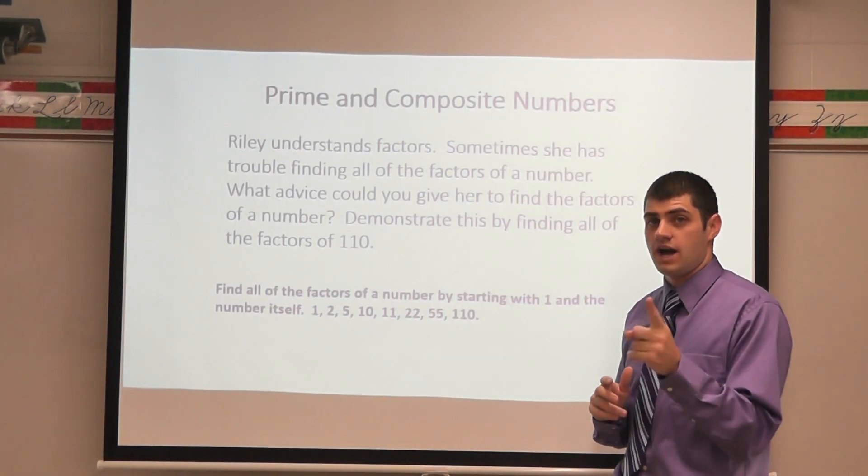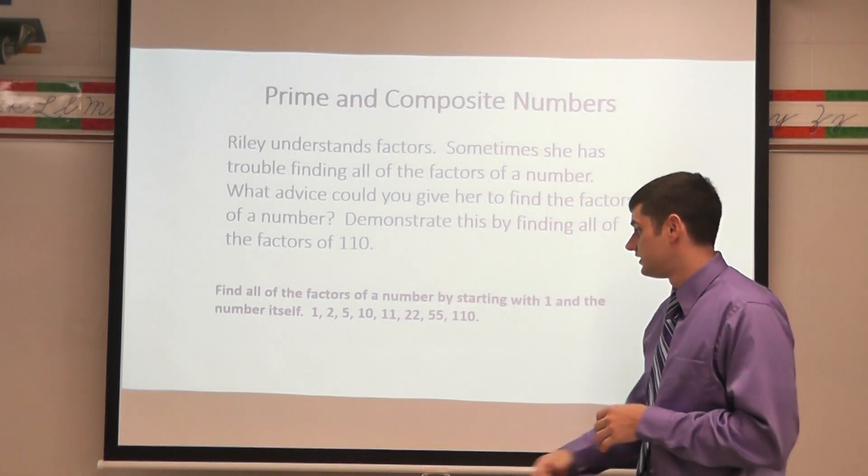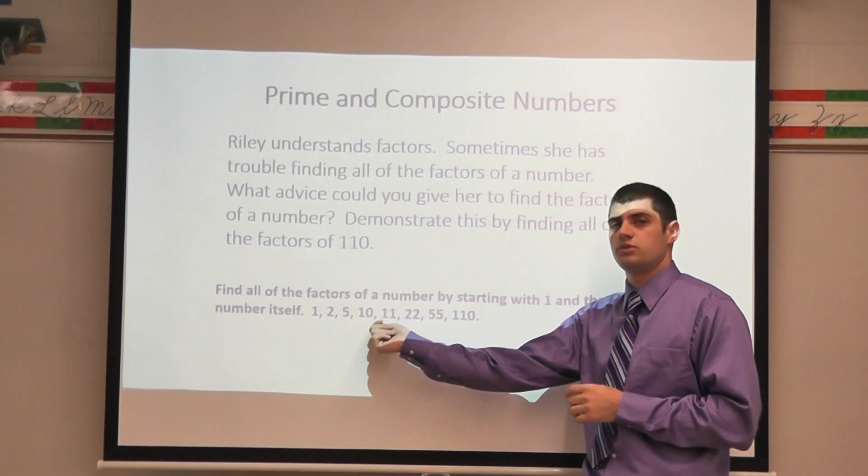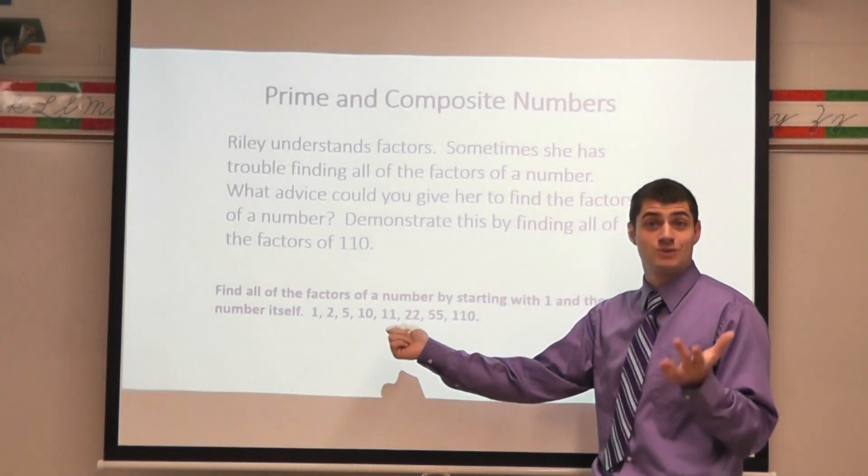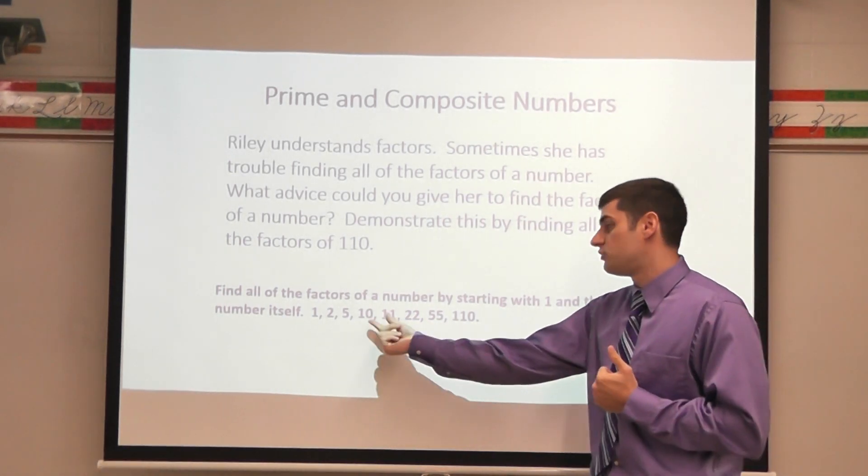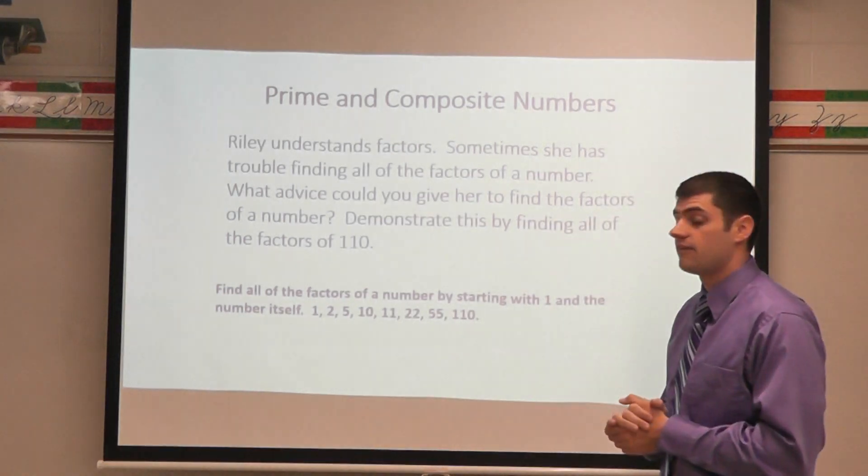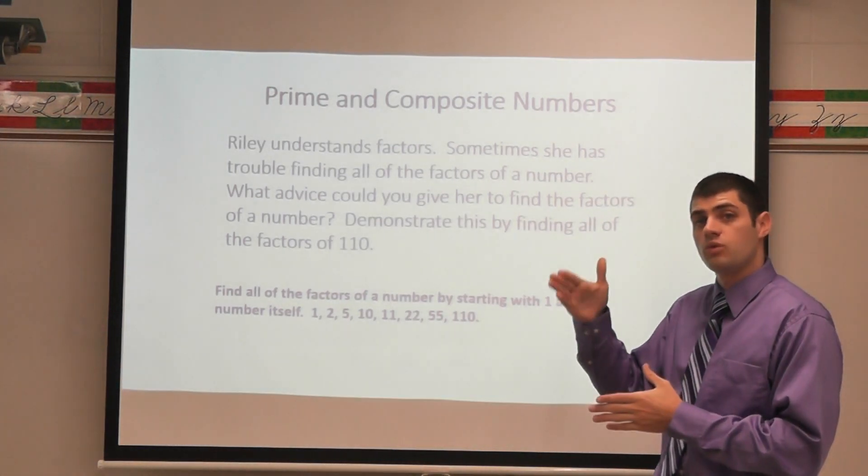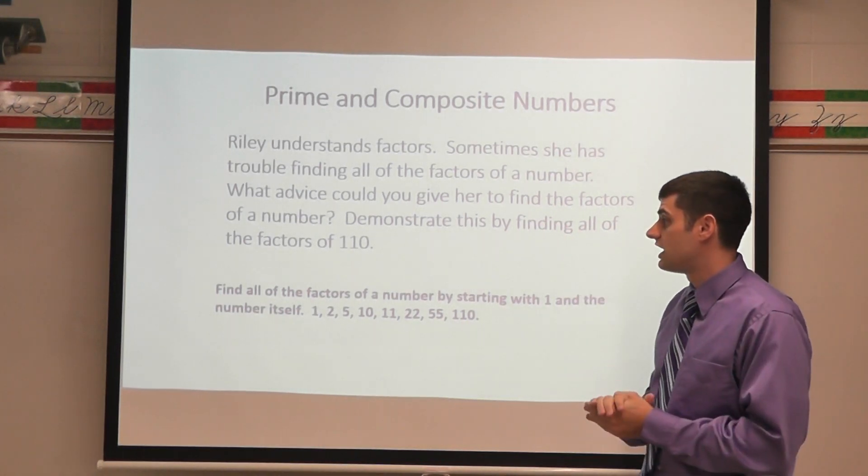I found all the factors. Do you know why I'm done? Yeah. If you see that I went in order 10 and 11 there's no other number between 10 and 11 unless we got decimals or halves or fractions in there. There's no whole number between 10 and 11. So I know that I found all the possible factor pairs going in order from least to greatest as I go through.